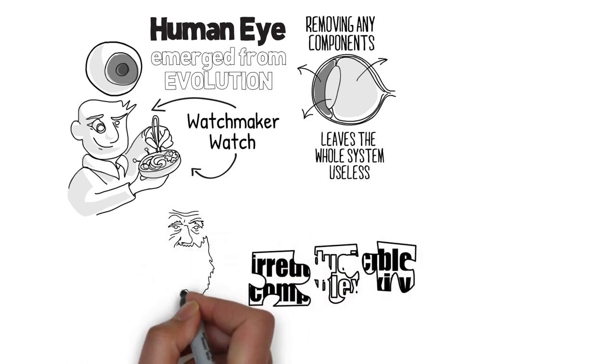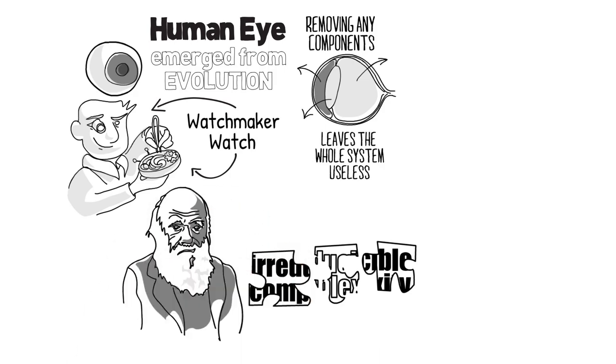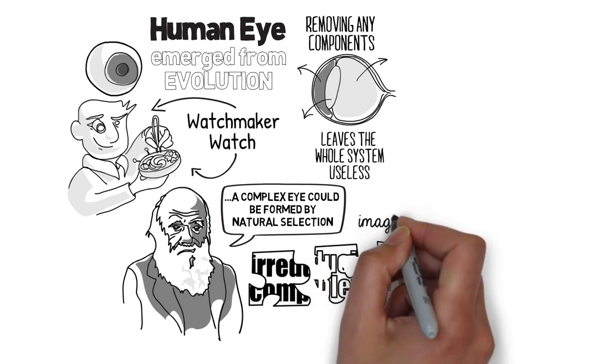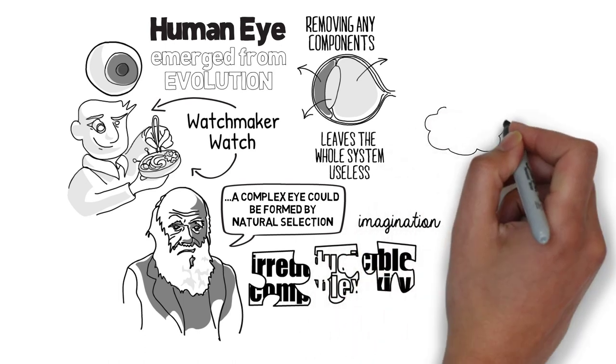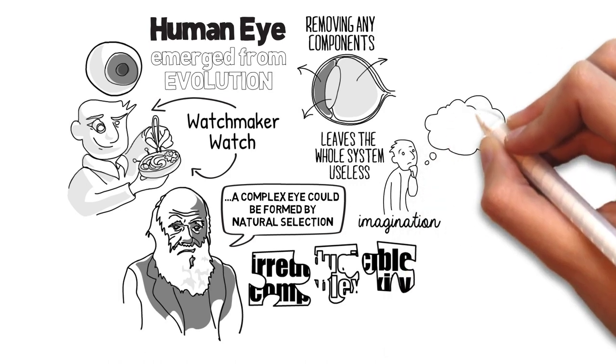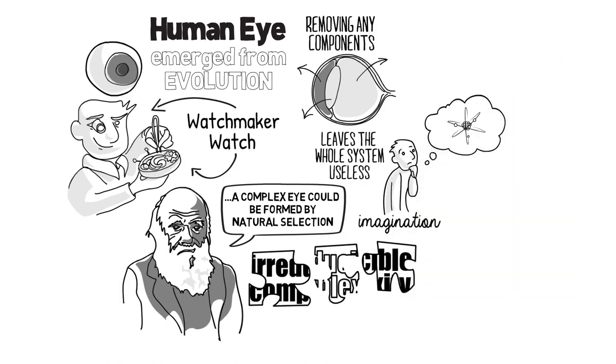Charles Darwin himself addressed this saying that a perfect and complex eye could be formed by natural selection though insuperable by our imagination should not be considered as subversive of the theory. In other words, just because we can't imagine something doesn't mean it's not possible.